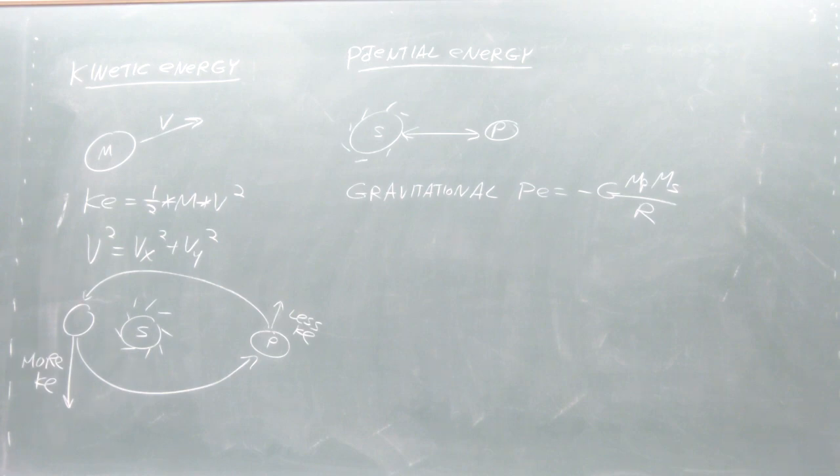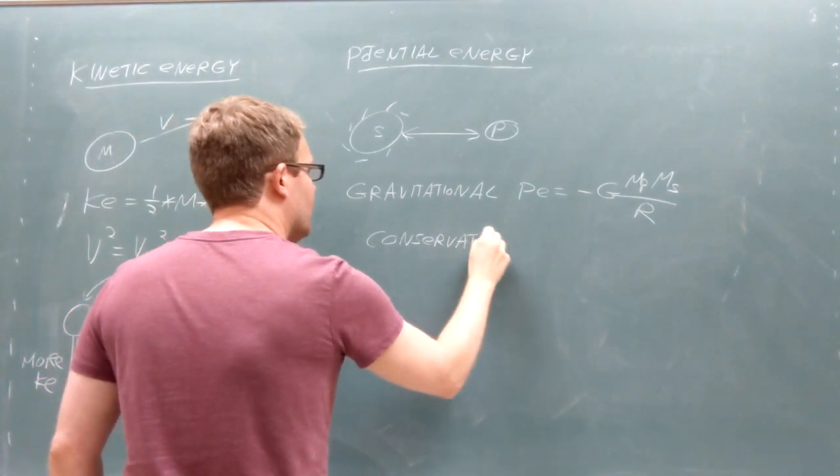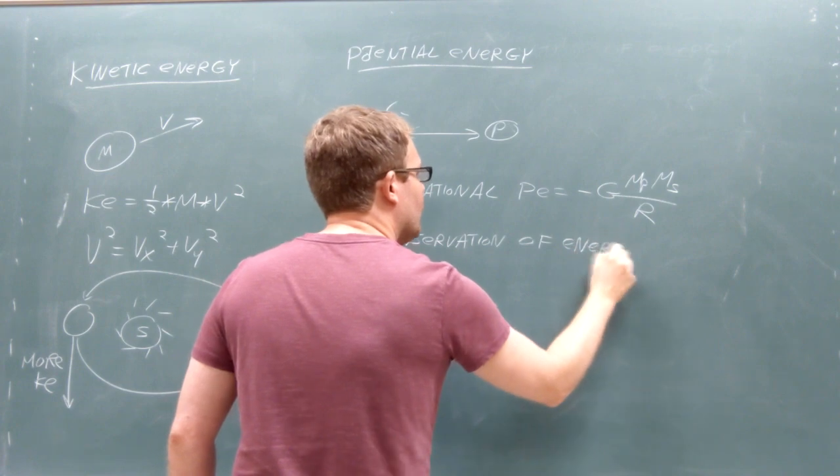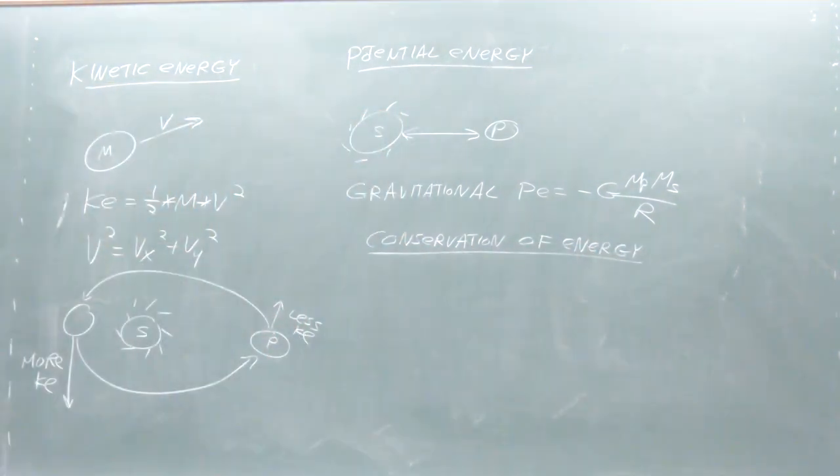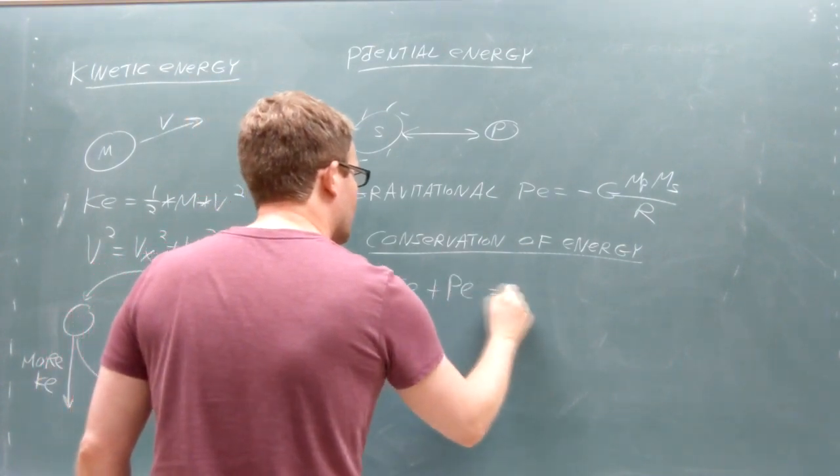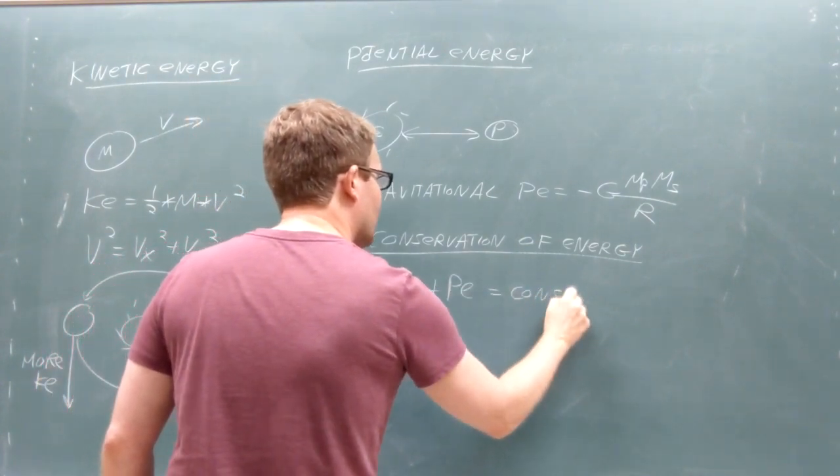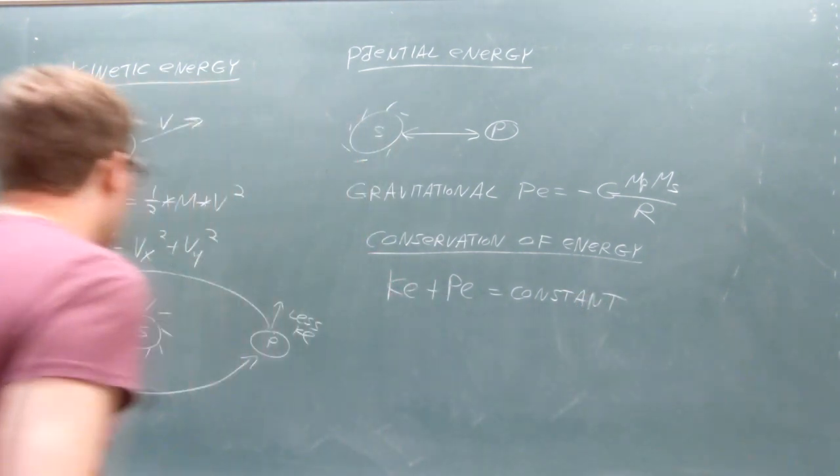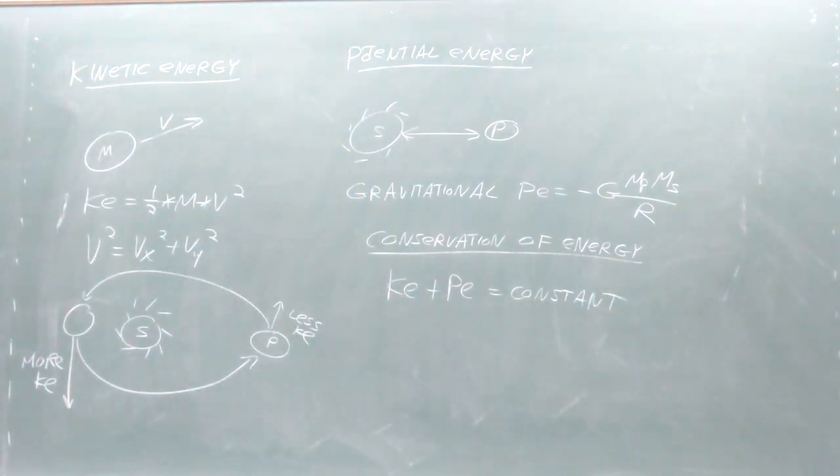The reason we are interested in energy is because the total energy in the universe must remain constant. We call this the law of conservation of energy. Since our star and planet are out in space, they experience essentially no air resistance, so this universal rule means that the total of the kinetic energy plus the potential energy must remain constant no matter where the planet travels.